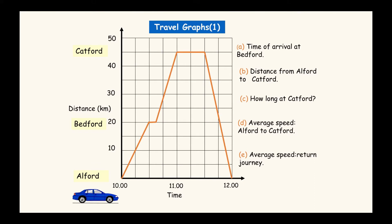In an exam you might get a distance-time graph with distance on the y-axis and time on the x-axis. This particular graph goes from 10 a.m. to 12 noon, with 11 in the middle. We can work out that each of the four squares represents 15 minutes - so four squares is one hour, two squares is half an hour, and one square is 15 minutes.